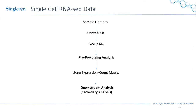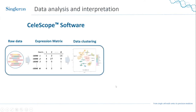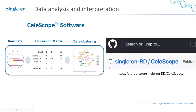After sequencing, the output is a FASTQ file. You run this through a pre-processing analysis pipeline, which outputs a count matrix that can then be used for downstream secondary analysis. For pre-processing, Single Runs offers the CellScope software, which takes the FASTQ files and outputs a gene expression matrix. This software is freely available on GitHub and anyone can use it. Let's go over the steps present in this pipeline.